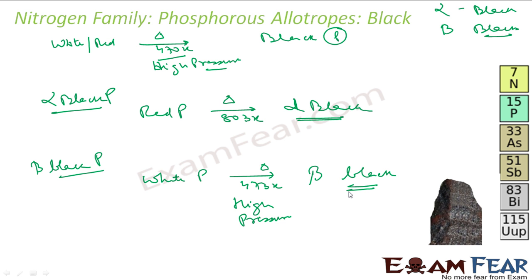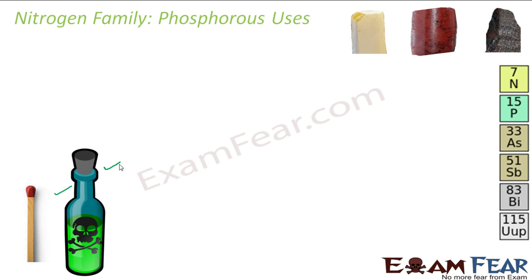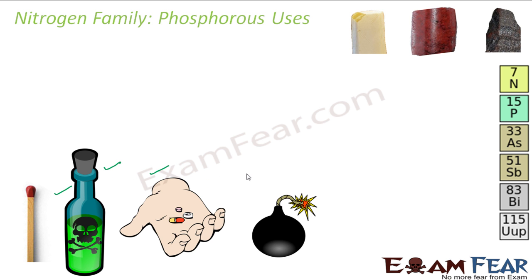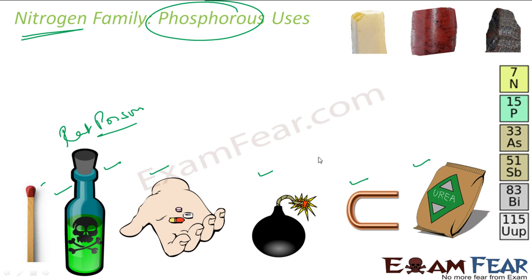Beta black phosphorus does not burn in air. The uses of phosphorus include manufacturing matches, rat poisons, medicines, bombs, alloys, and fertilizers. These are some of the important applications of phosphorus.